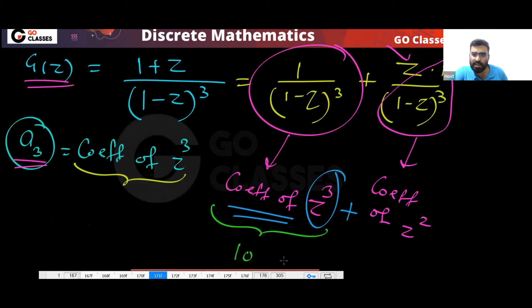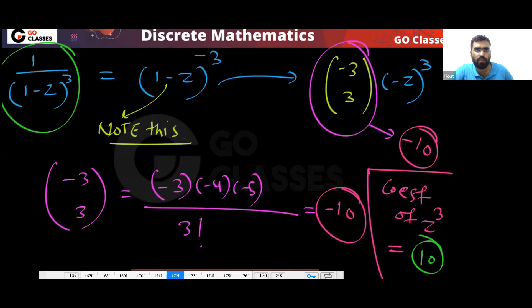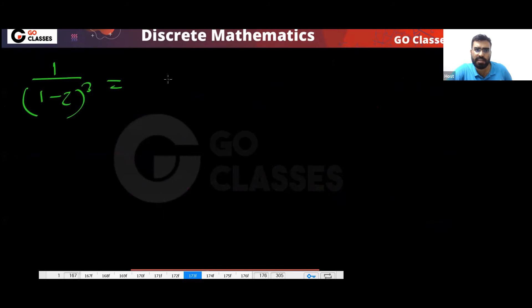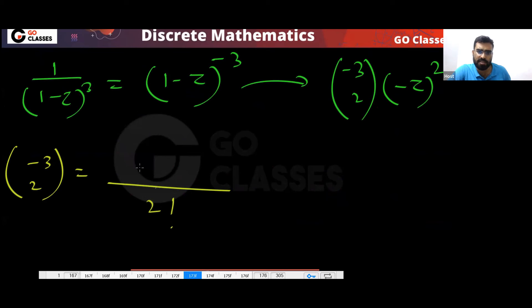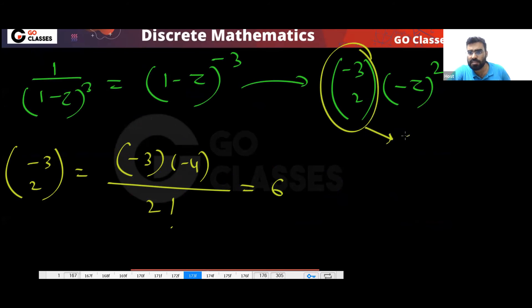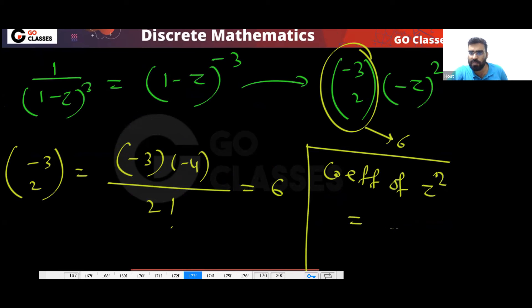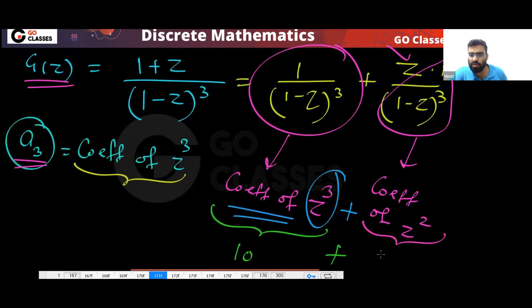Now for the coefficient of z² in 1/(1-z)³, written as (1-z)^(-3), that is (-3 choose 2). Writing it out: (-3)×(-4) divided by 2, which gives six. So the coefficient of z² is six.